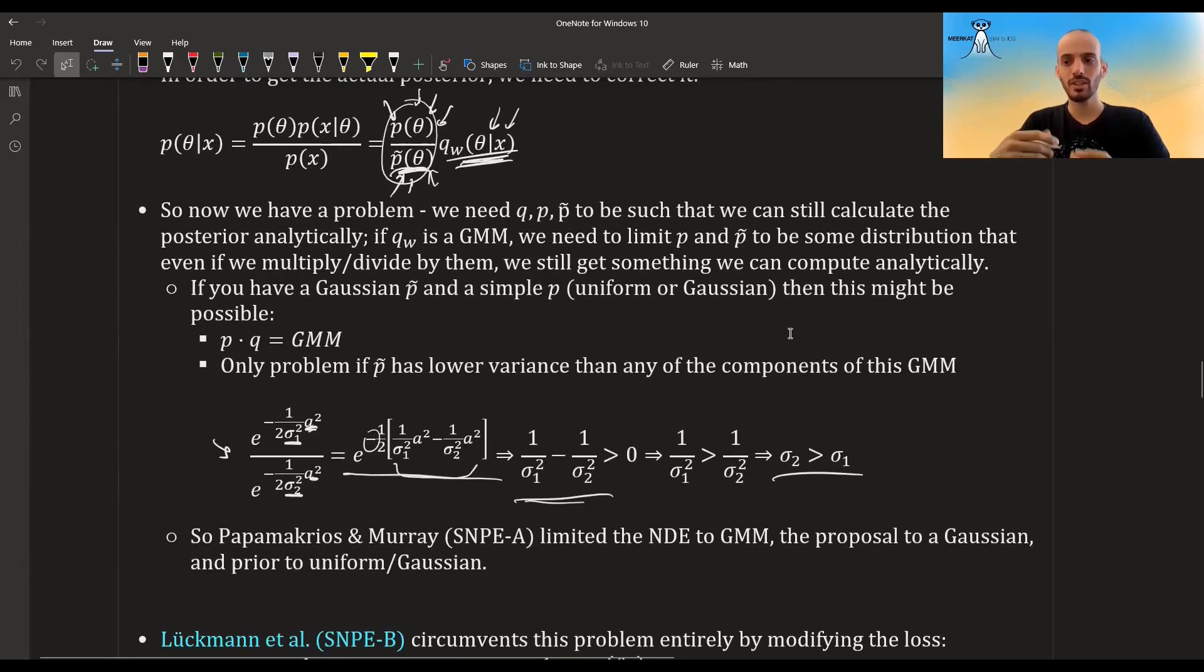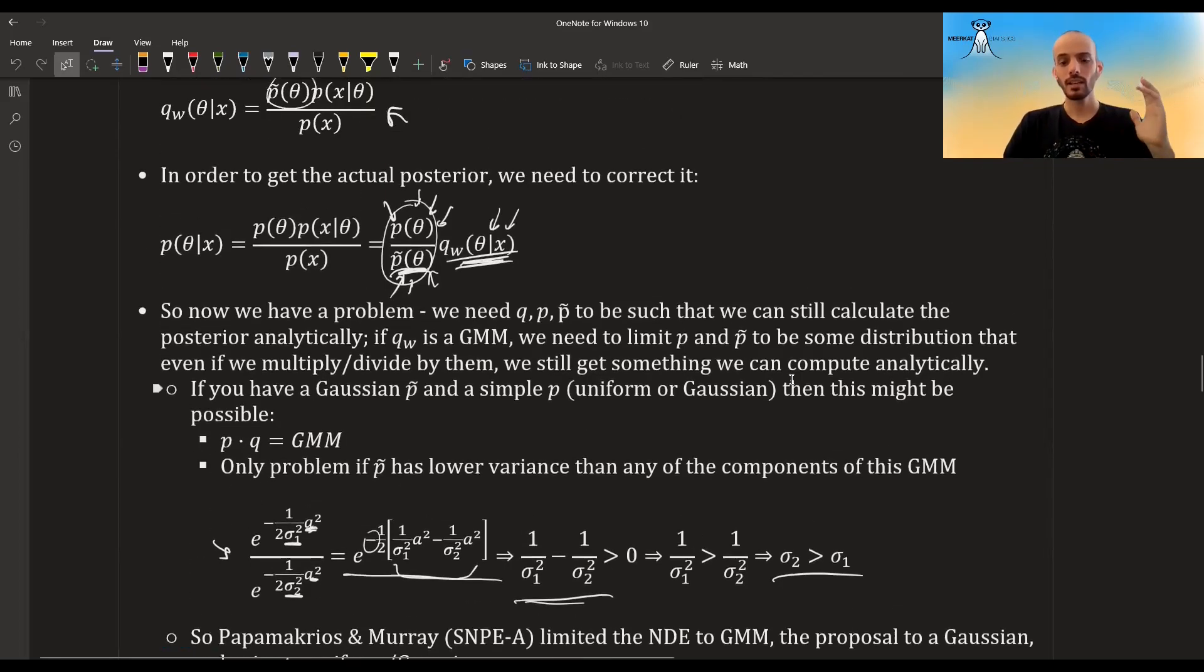Indeed, in the paper and following papers they mention this instability to the algorithm—that it could be that the algorithm reaches some points where the proposal prior actually has less variance than the GMM and then the algorithm breaks down. But in most cases it won't, and it will work.